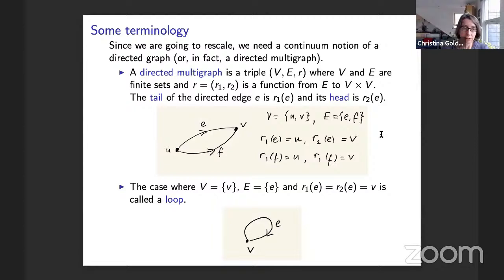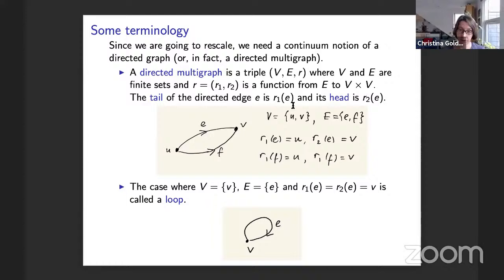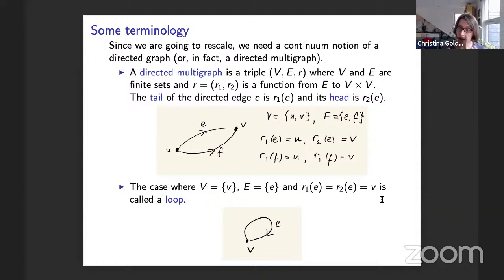I want to start with some terminology. Since I'm going to be rescaling, I need some continuum notion of a directed multigraph. A directed multigraph is a triple: a vertex set, an edge set, and a function R which tells us the relation between the two. R has two components, R1 and R2, and is a function from the edge set into the vertex set times the vertex set. R1 of E is the tail of a directed edge E, and R2 of E is its head. This allows us to deal with the problem of multiple edges relatively straightforwardly.